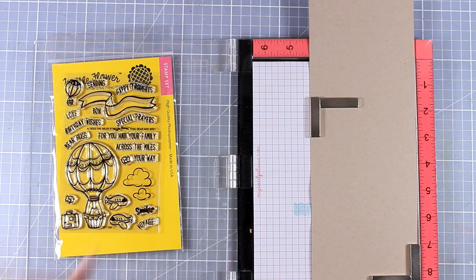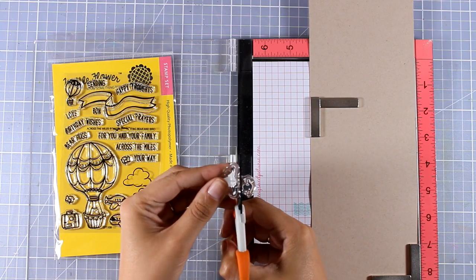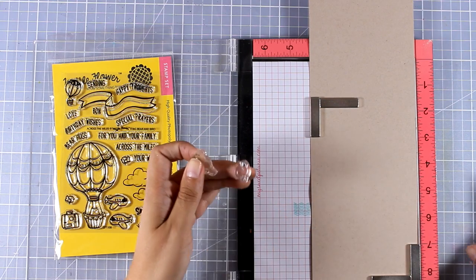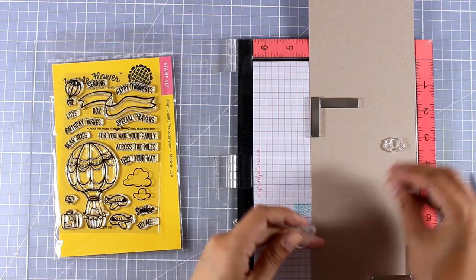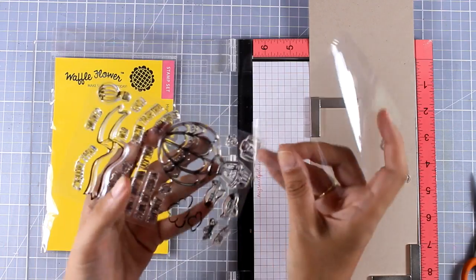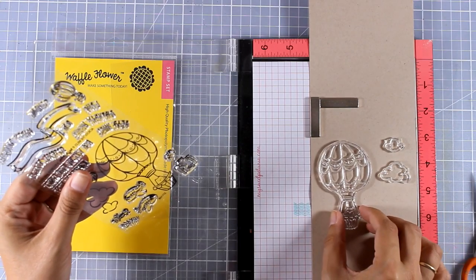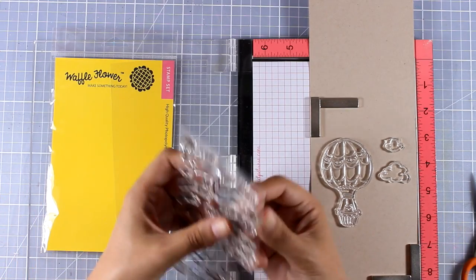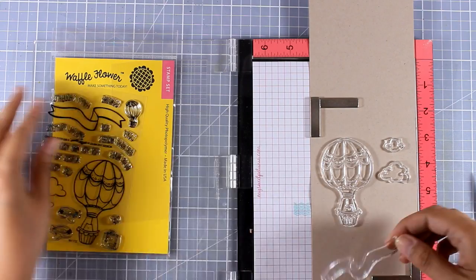Now I'm going to work on the focal points. I'm going to stamp the clouds. These clouds were combined but I don't want them to be so close to each other so I'm going to separate them. I'm also going to stamp the hot air balloon as well as the big banner where I'm going to stamp my sentiment.